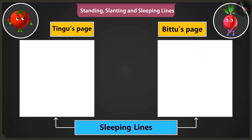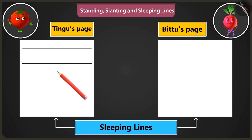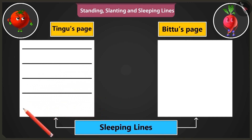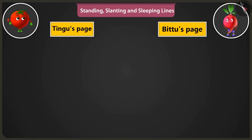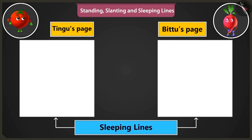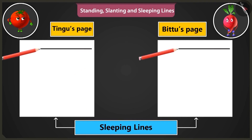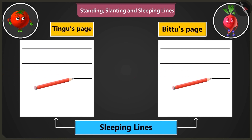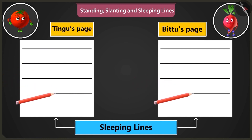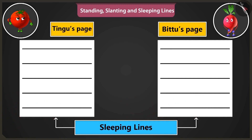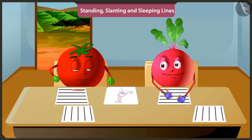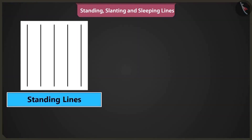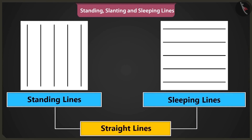Now let's practice making sleeping lines. Draw sleeping lines from the left side of the page to the right, one below the other. Like this. Okay, I am making. Now we have to practice making the sleeping lines from the right side of the page to the left. So we will start from the right side of the page and move towards the left. You are right. Bittu, keep this in mind that the standing and sleeping lines are called straight lines. Yes, I will remember that.